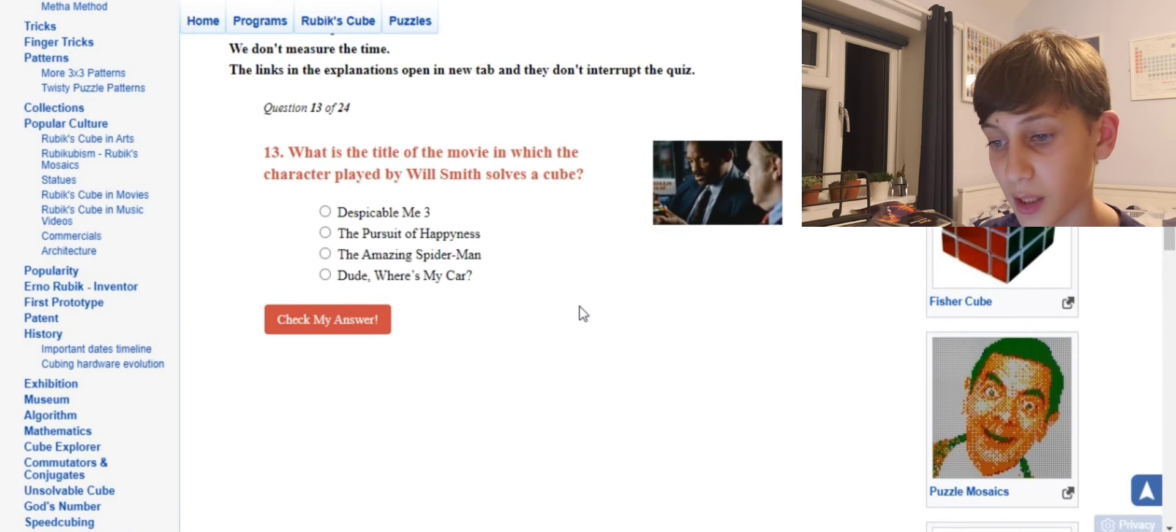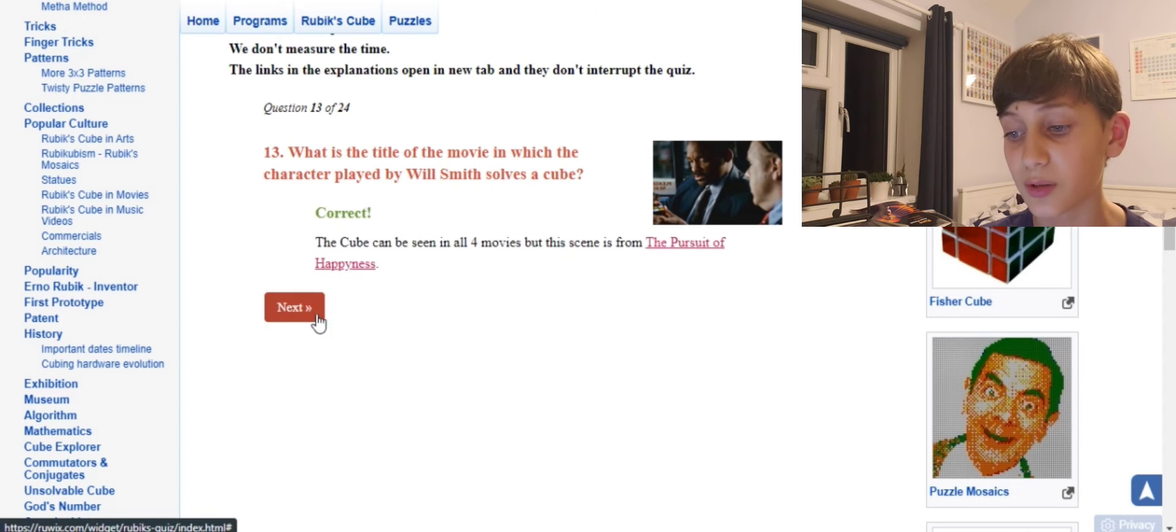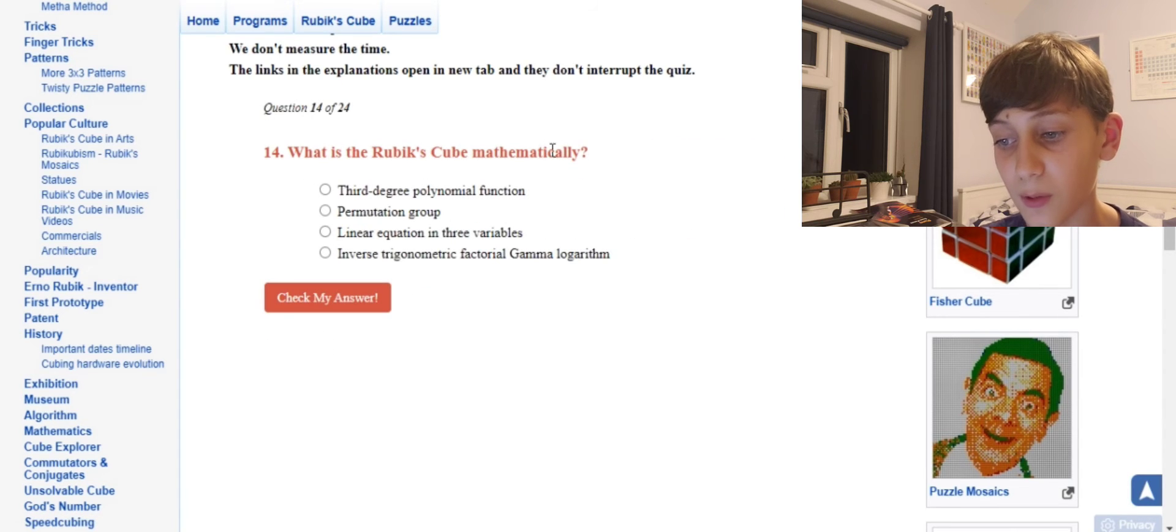Okay, what is the title of the movie? Oh, that's The Pursuit of Happiness, I think. Yeah, because Rubik's... no, Dude Where's My Car, that's definitely not a film, and then The Amazing Spider-Man, 100% no. It's The Pursuit of Happiness. Nice!